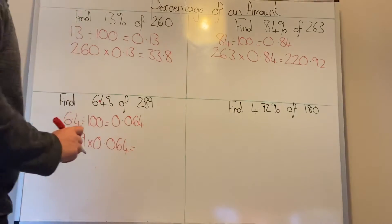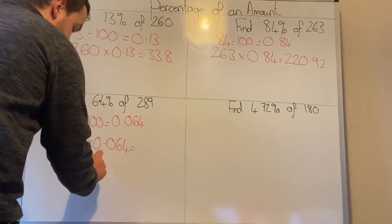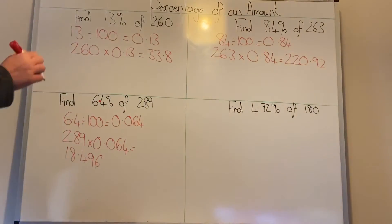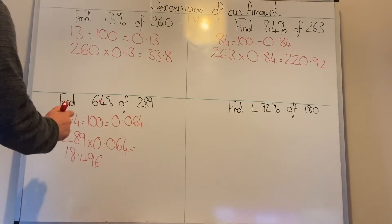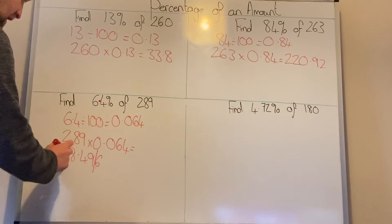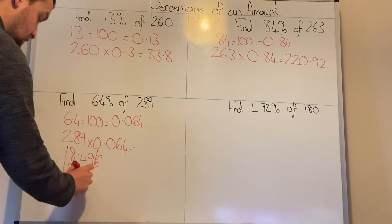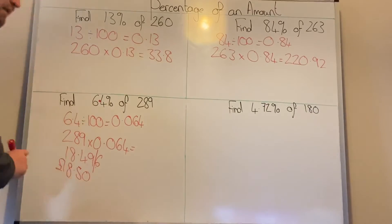Now remember if this was money you could only have two decimal places, so you'd have to draw the line. It's a 6 there so that rounds up. So we have 18.5 or 18.50.